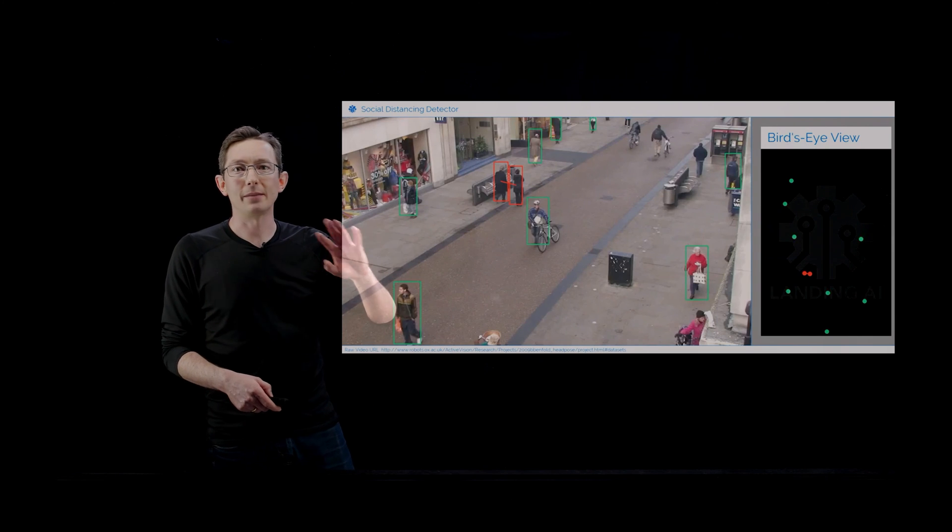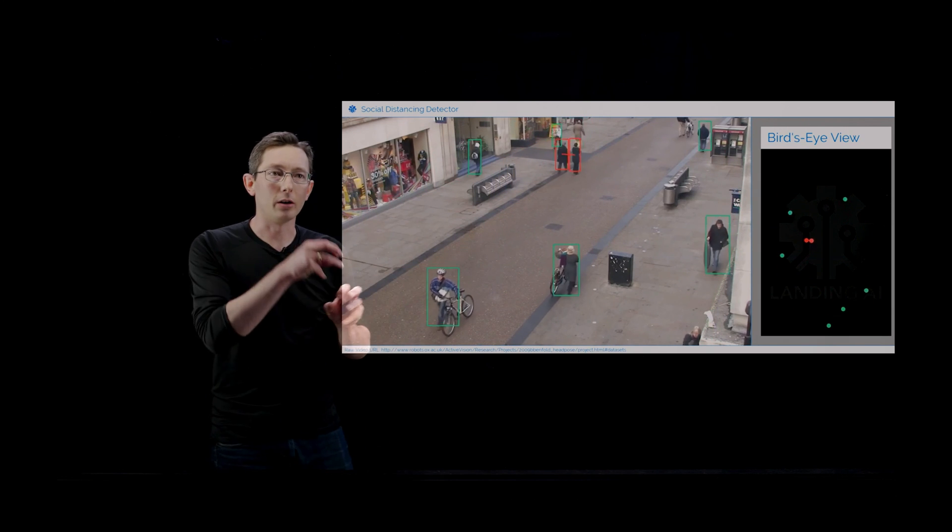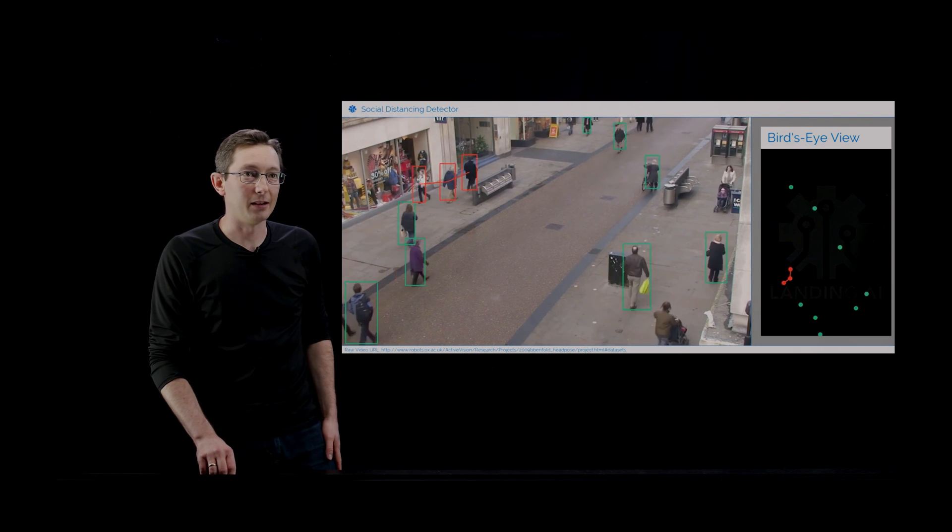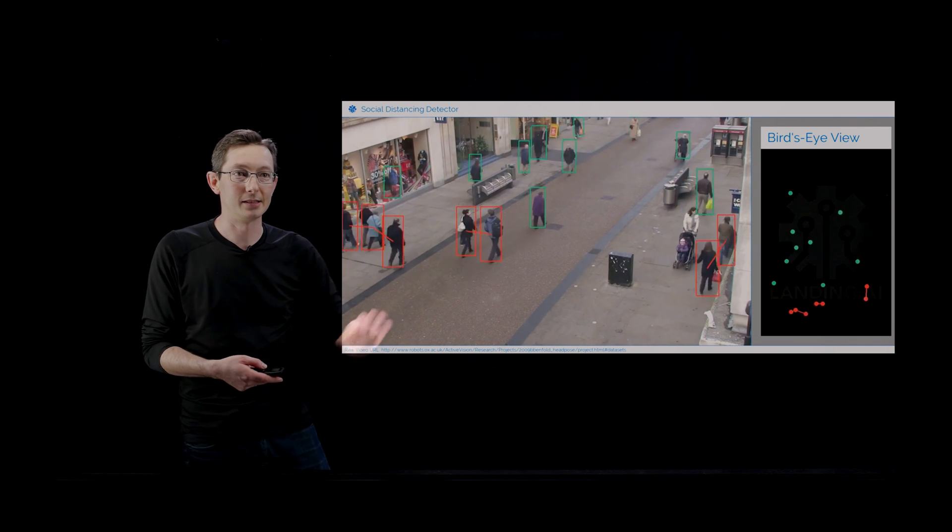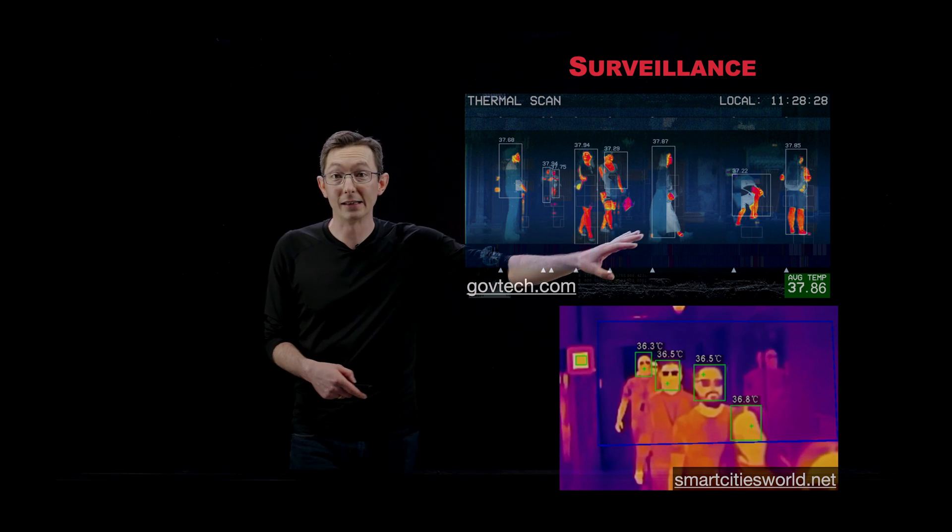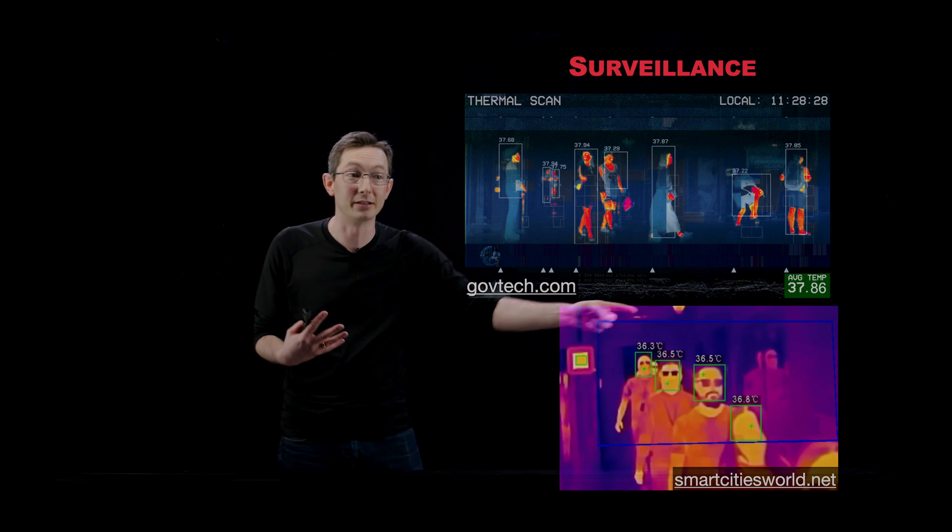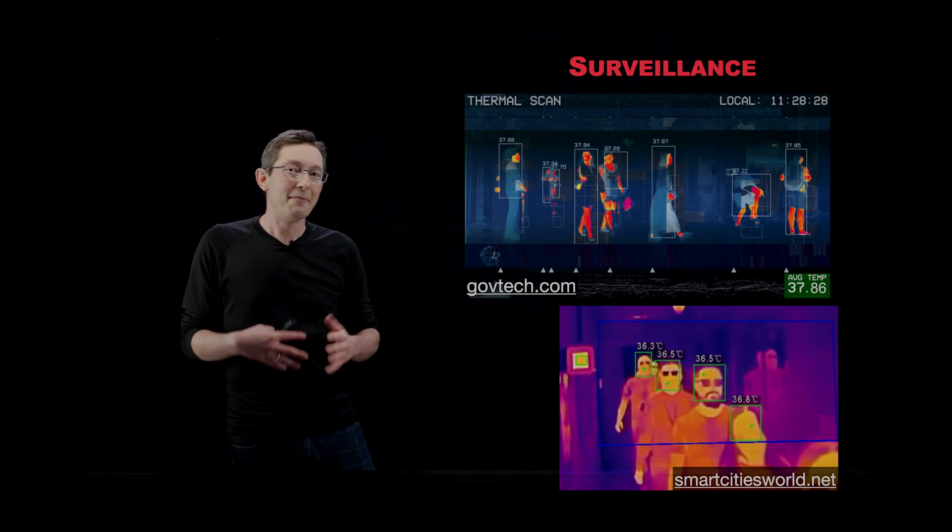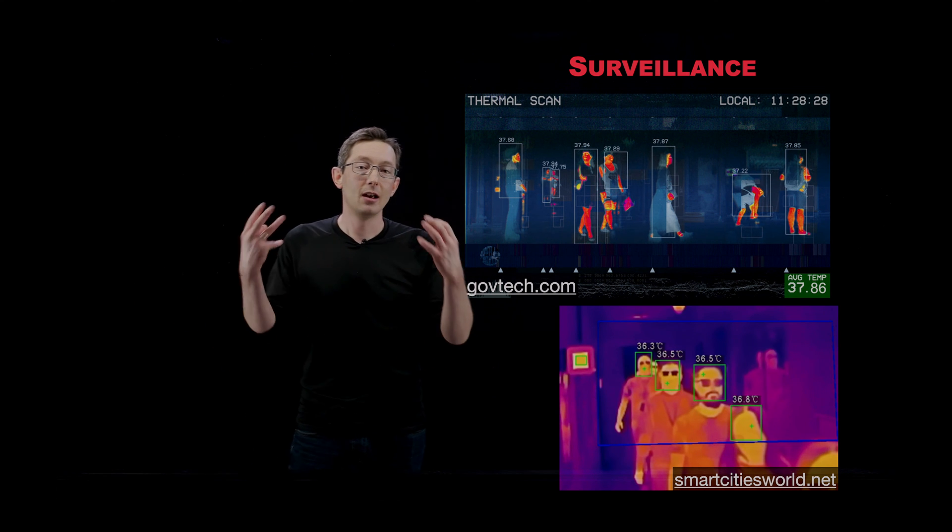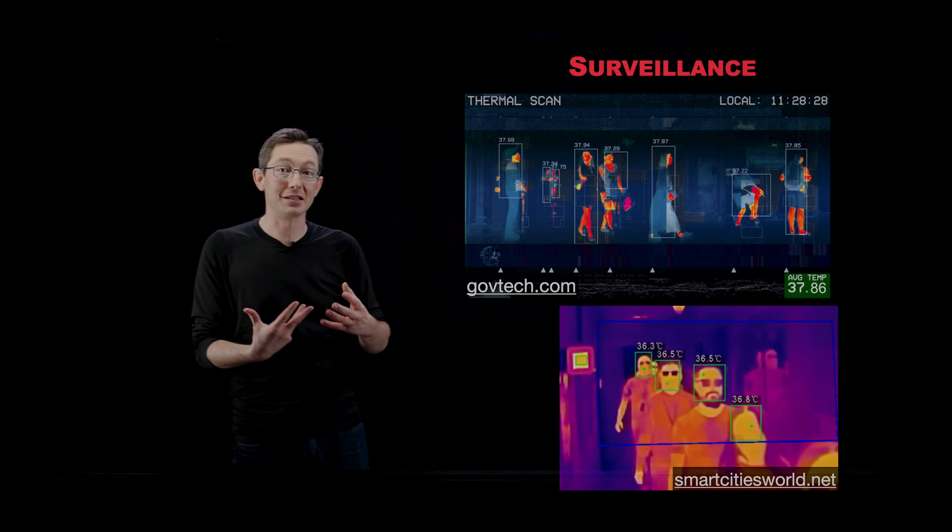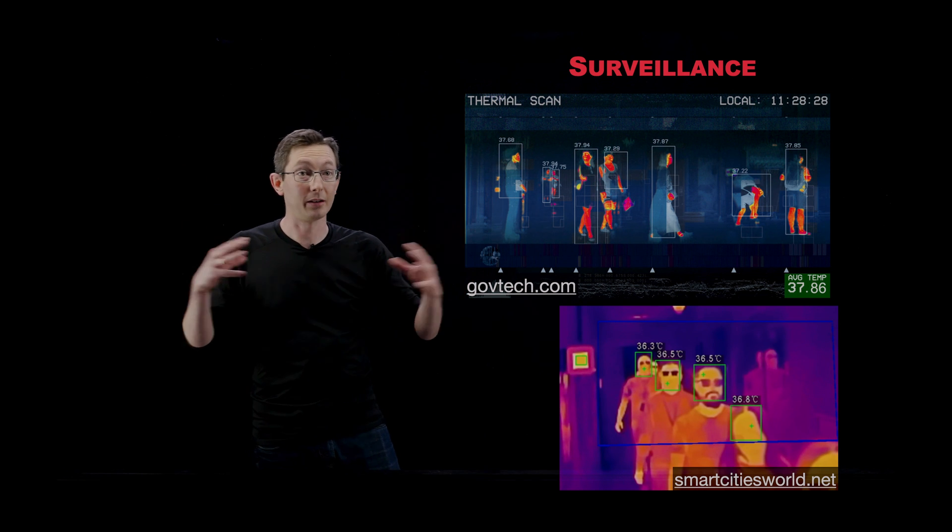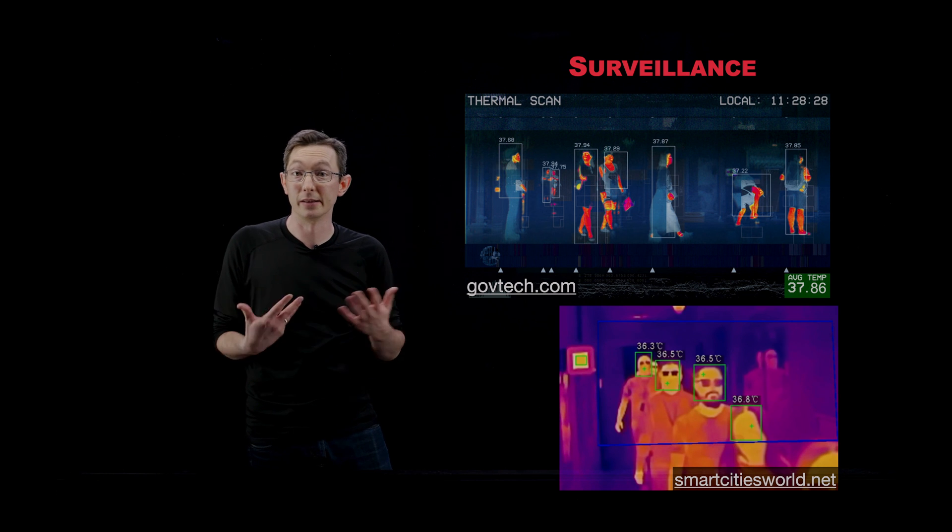There's already discussions about software to track whether people are properly socially distancing, to collect that information. This is a pretty simple computer vision problem now, actually. This is commercial. There's also discussions about whether or not we should have thermal scans in airports and train stations and places. Can we measure if someone has a fever in real time? This brings up a lot of privacy concerns. Having an extensive surveillance network and having measurements of your system is critical for good feedback control. But there are big privacy concerns. Do we want to ramp up a massive surveillance network? That's something that is a real concern and something that we really need to think about.